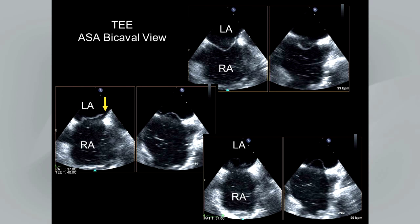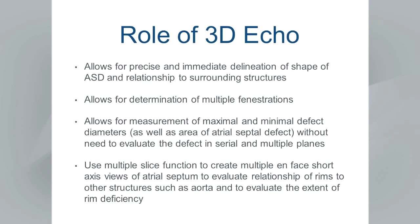An atrial septal aneurysm is defined as excursion of septal tissue of more than 10 millimeters from the neutral plane of the atrial septum into the atrium, or a total excursion of greater than 15 millimeters. This is easily demonstrated by M-mode imaging — here performed on intracardiac echo — showing a total excursion of 18 millimeters, meeting the definition. Many patients with atrial septal aneurysm have an associated PFO; in most series this has been reported up to about 60%.